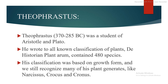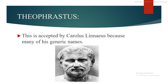Second, I am going to discuss about Theophrastus. Theophrastus, the time period was 370 to 285 before Christ. He was the student of Aristotle and Plato. He wrote the first known classification of plants, the Historia Plantarum, which contained about 480 species. His classification was based on the growth form, and we still recognize many of his plant genera, like Narcissus, Crocus, and Cronus. His generic names were accepted by Carolus Linnaeus.